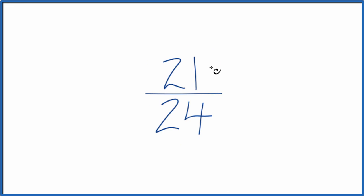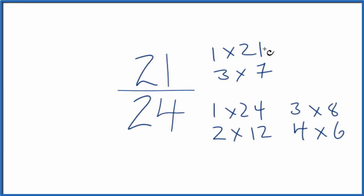So let's write the factors for 21 and 24. So these are the factors for 21 and then 24.